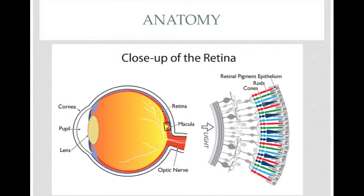Starting with a little bit of anatomy: this is a cross-section of the eye, and at the back we have the retina. This is a more zoomed-in version of the retina. What you can see here is the retinal pigment epithelium (RPE) at the very back of the retina. It provides blood supply to the outer one-third of the cones — just the outer portion. So if you have a detachment, you basically have no blood supply to these neurons.